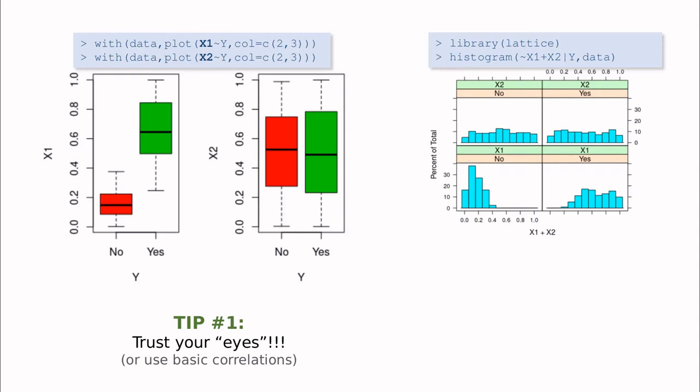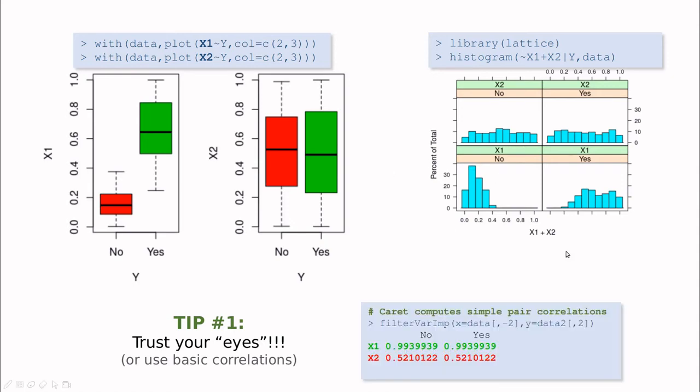You can also use basic correlations. So one way to do that is using this function filter variable importance in caret. So here, remember that my second variable is y. So I'm saying that x is everything except the second variable and y is only the second variable. And as you can see here, just computing correlations, you're capturing that x1 is important and x2 is completely irrelevant.